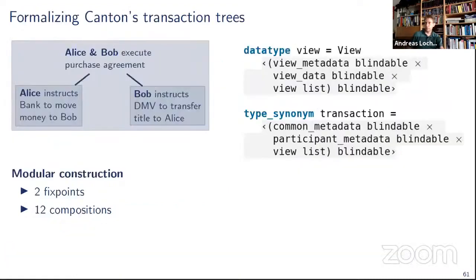For Canton, so this was the transaction tree. In reality, it's a bit more complicated. We have metadata and data for each view, and the view is such a gray box here. And then there's essentially here the recursion through the list type constructor. So we have an arbitrarily branching tree here, and the transaction as a whole adds just more metadata. If you count things, we have two fixed points here that we have to go through and 12 compositions. And if we had to do that manually, we would probably be still trying to find out what is the correct definition. Whereas the systematic approach gives you all that for free.